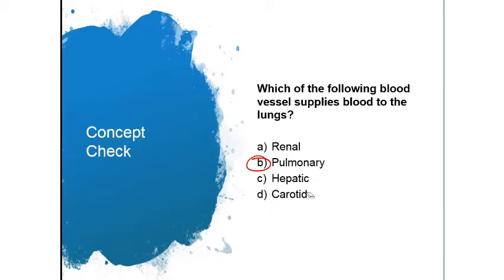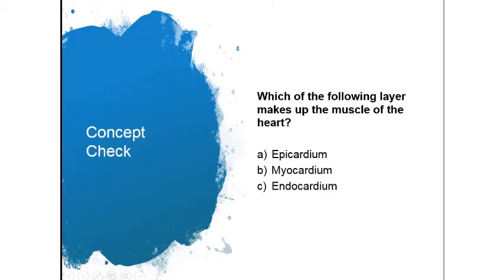Which of the following layers makes up the muscle of the heart? That would be the myocardium — 'myo' means muscle. The endocardium is where the blood will be in direct contact, and the epicardium is the layer that is continuous with the visceral pericardium.